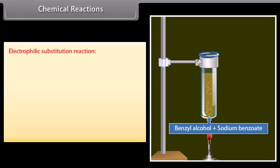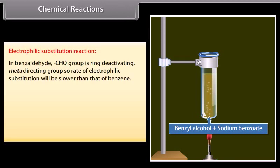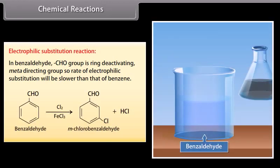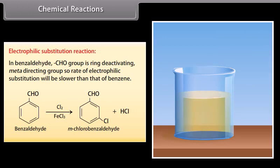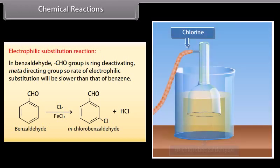Electrophilic substitution reaction: in benzaldehyde, the aldehyde group is a ring-deactivating, meta-directing group, so the rate of electrophilic substitution will be slower than that of benzene. Benzaldehyde reacts with chlorine and ferric chloride solution to form meta-chlorobenzaldehyde and hydrochloric acid.